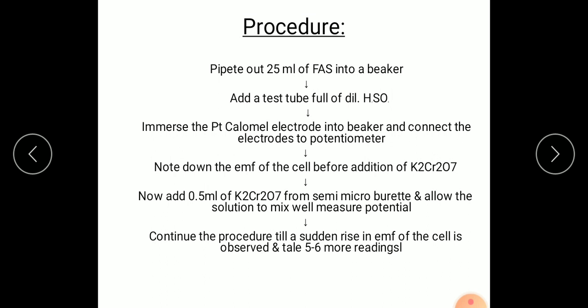Next immerse the platinum-calomel electrode. Platinum electrode and calomel electrode will be taken. One is indicator electrode which indicates the change in concentration and calomel electrode acts as reference electrode. These are immersed into the beaker and connected to the potentiometer. Note down the EMF of the cell before addition of K2Cr2O7. Without adding any drop of K2Cr2O7, take the first EMF reading. Then add 0.5 ml of K2Cr2O7 from semi-microburette, allow the solution to mix well and measure the potential.